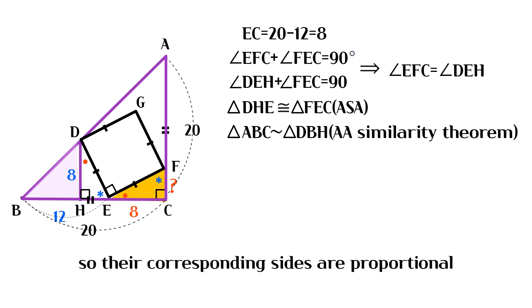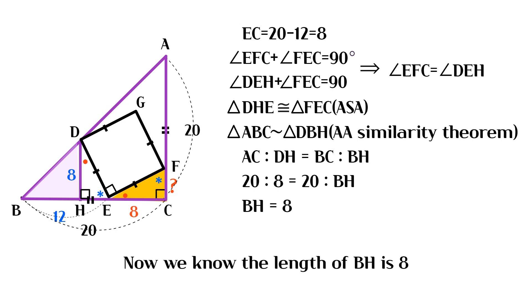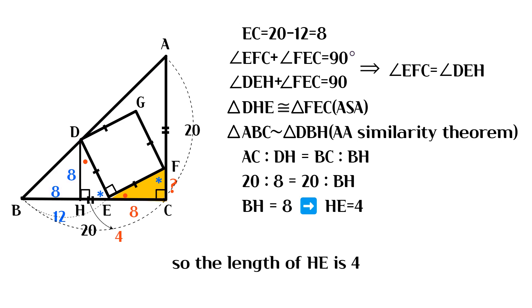So their corresponding sides are proportional. AC to DH equals BC to BH. Now we know the length of BH is 8, so the length of HE is 4.